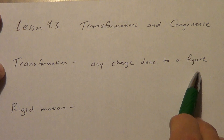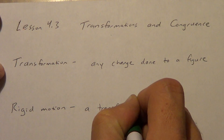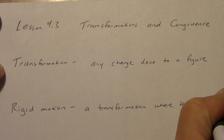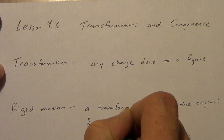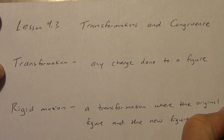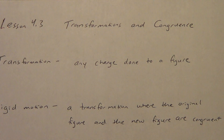A transformation is any change done to a figure, but a rigid motion is a transformation where the original figure and the new figure are congruent. Rigid has the idea of not moving — so when we talk about rigid motion, the motion doesn't change the angles or the side lengths. It doesn't stretch or bend them.